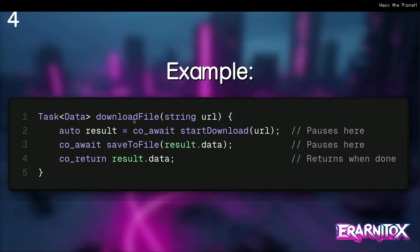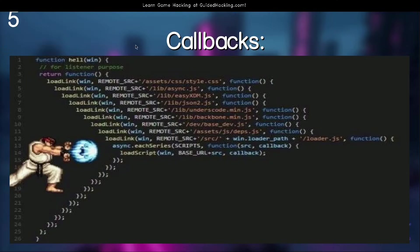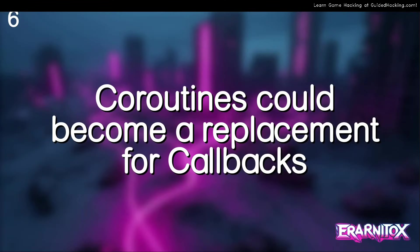We can also await on a save call that would otherwise be a blocking call. This is relatively elegant because before coroutines we would have to handle this with callbacks — we would start a download, pass in a callback function that would then call save_to_file, which would in return need another callback to return the data. That is really tedious and can be ugly. Here is a small JavaScript example showing that when you pass a lot of callback functions you get deeply nested code — what's known as callback hell. Coroutines could become a replacement for callbacks.